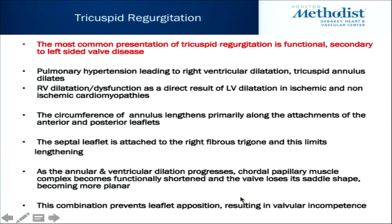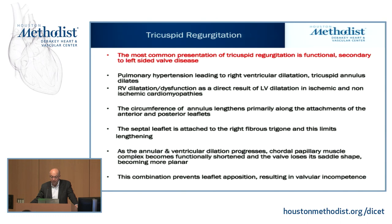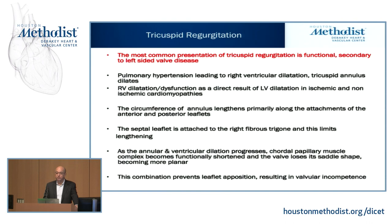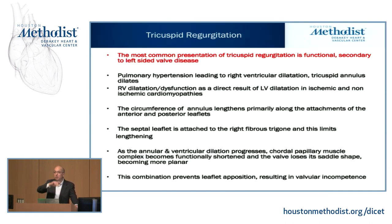Tricuspid regurgitation occurs most commonly for a functional reason, secondary to left-sided disease. You get pulmonary hypertension leading to right ventricular dilatation, and the tricuspid annulus dilates. RV dilatation or dysfunction can also occur directly as a result of left ventricular dilatation in ischemic and non-ischemic cardiomyopathies. The circumference of the annulus lengthens primarily along the attachments of the anterior and posterior leaflets, because the septal leaflet is attached to the central fibrous body of the heart and is fixed in position.